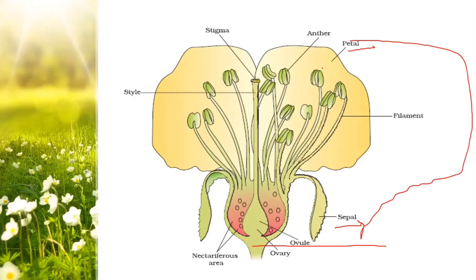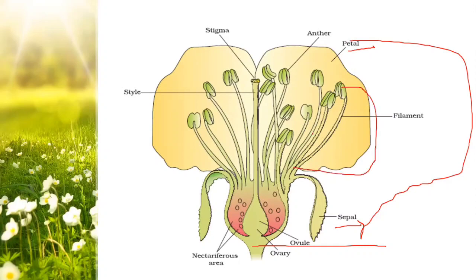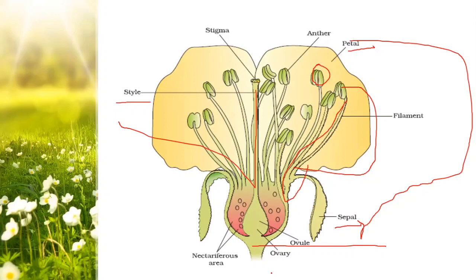The next whorl is the androecium. The androecium is the male reproductive part. The stalk of the stamen is the filament. This is the third whorl from outer to inner. The innermost whorl of the flower is the gynoecium. In the gynoecium, the individual units are called pistil or carpel. The stigma is usually sticky or shaped to receive the pollen grains. The style connects the stigma down to the bulged basal part - the ovary - where the ovules are present. This is the structure of a typical angiosperm flower.